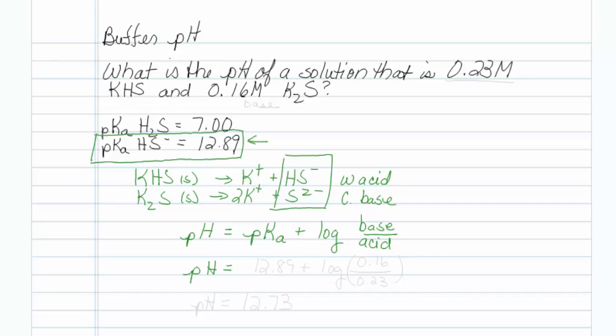pH is equal to 12.89 plus log. My base form is right here, the 0.16, and my acidic form is the 0.23.